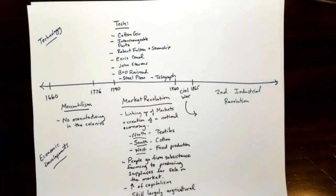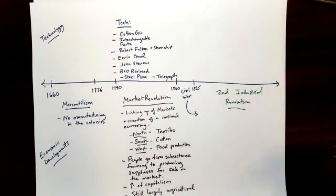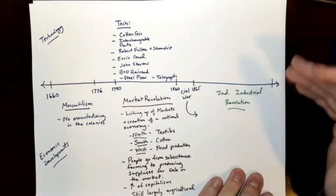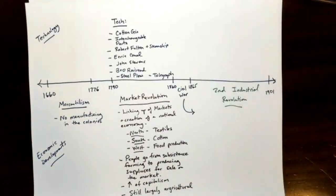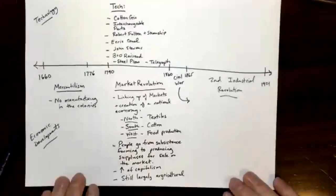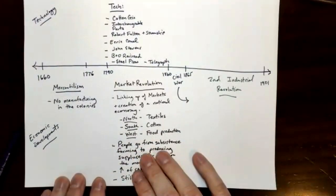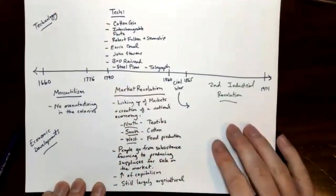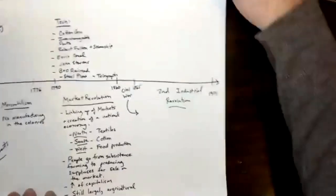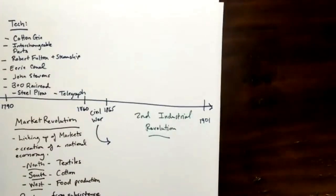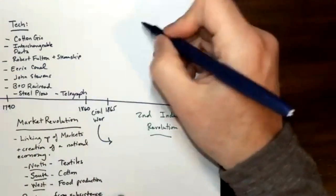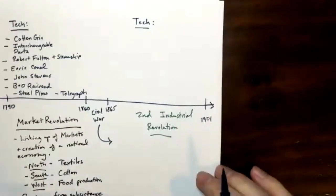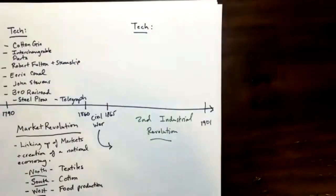The Second Industrial Revolution is really going to take place between 1865 and around 1901, which is the beginning of the progressive era brought in by Teddy Roosevelt. Before we get into what the Second Industrial Revolution was and how it evolved America's economy, we have to understand that it would not have happened without new technologies. So let's go through some of the tech that's developing right before the Civil War, during the Civil War, and after. Some of this technology was created before the Second Industrial Revolution but was incredibly influential during this era.